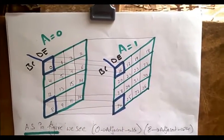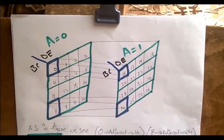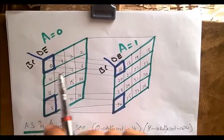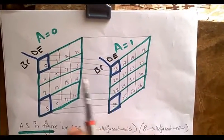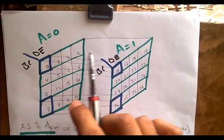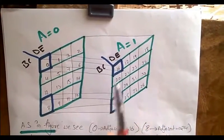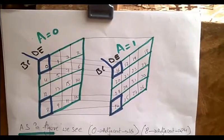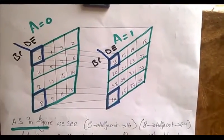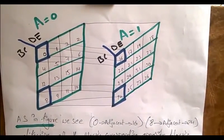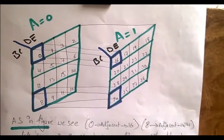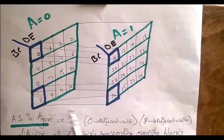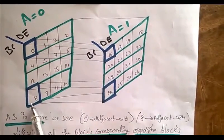To show that I have already drawn this to reduce time and for time-saving purposes. See, 0 and 16, 8 and 24, likewise all the literals of all the blocks which are opposite to each other are adjacent. Note the word adjacent - we do looping and pairing to the adjacent blocks only.